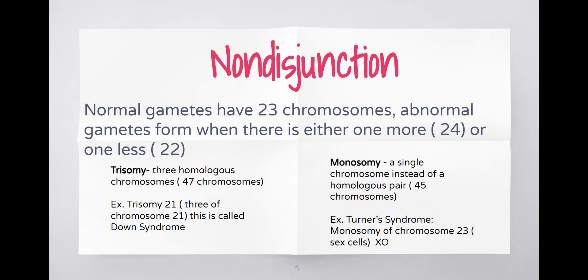Now we're going to talk about some key vocabulary words. I want your notes taken on trisomy and monosomy; the disease examples you can just watch since you'll need them for your assignment but don't need to write everything down. Normal gametes have 23 chromosomes. Abnormal gametes will either end up with 24 or 22 chromosomes. When a gamete or body cell has too many chromosomes, we call that trisomy - because when looking at the picture of all chromosomes there are three homologous chromosomes.